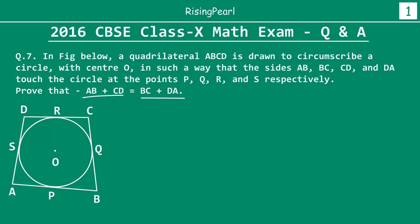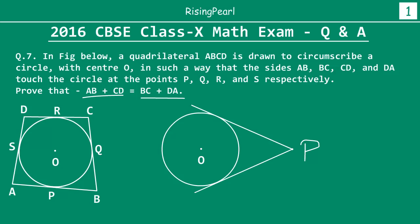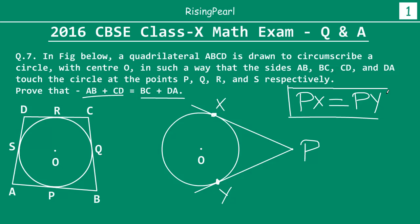The main theorem behind this question — this is actually an application of that theorem — goes like this. If we have a circle with center O and a point P which is an external point outside the circle, then we know that we can draw a maximum of two tangents from this external point to the circle. Let's say the tangent points are X and Y. Then PX will be equal to PY — the lengths of the two tangents drawn from the same external point to the same circle are equal.